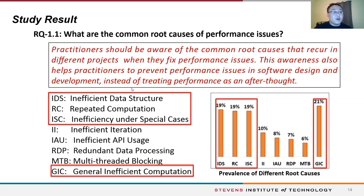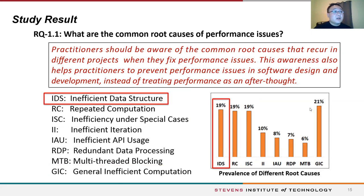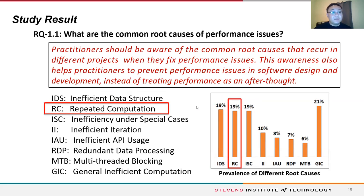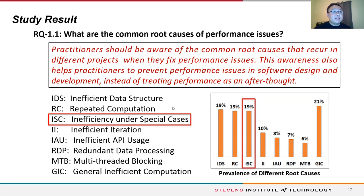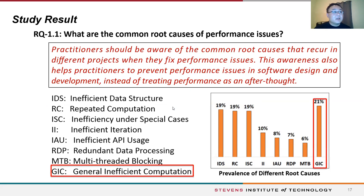We identified eight types of root causes occurring in the performance issues in our dataset. There are four prevalent root causes, each accounting for about 20% of our issues. The first is inefficient data structure, which consumes large amounts of memory or takes a long time. The second is repeated computation that produces the same output. The third is inefficiency under special cases, where the program runs well for most common cases but becomes extremely slow or causes memory bloat under special cases. The fourth is general inefficient computation, usually addressed by algorithmic improvements.